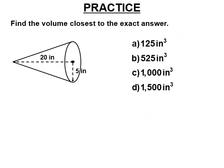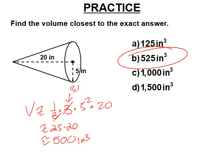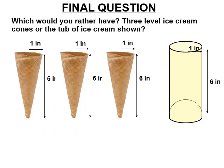Since the answers aren't close to each other, let's use 3 for pi. Volume equals one third times 3 times radius squared times height. Those cancel, leaving 25 times 20. 25 times 20 is 500 cubic inches. Since we used 3 instead of 3.14 we're a little low, so the closest answer is 525 cubic inches.